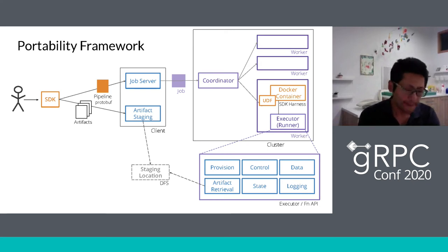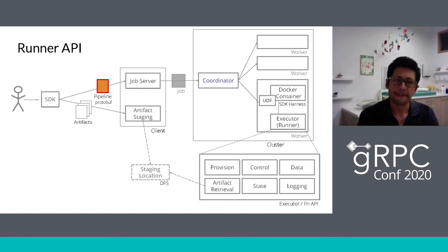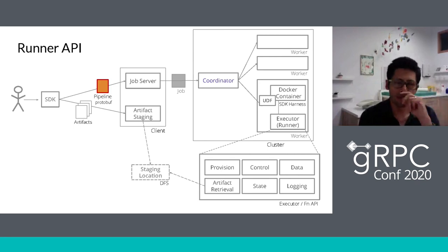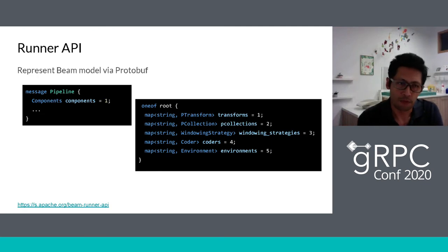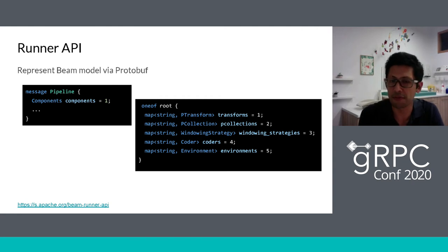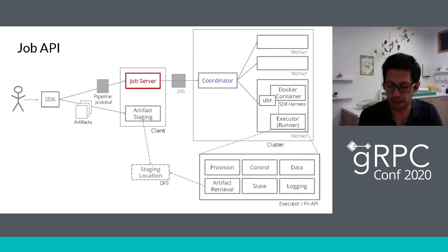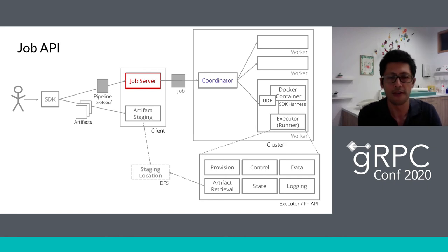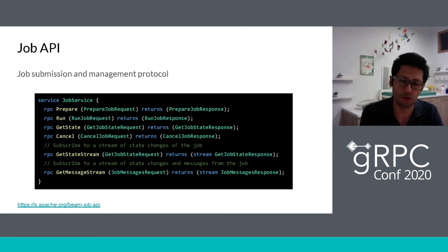The job server and job service allow us to control the execution of a job — a pipeline — and this is just a submission and management protocol. Even if you're not familiar with gRPC, you can immediately understand this: we define a service with methods where we can prepare an execution, get the current state of the job, and cancel a running job. More importantly, we can subscribe to changes in the job — for example, to react when a job finishes.